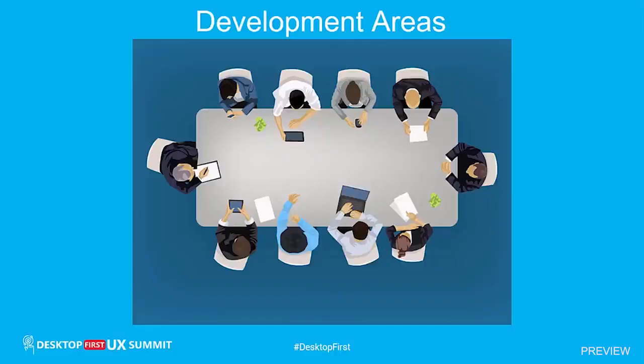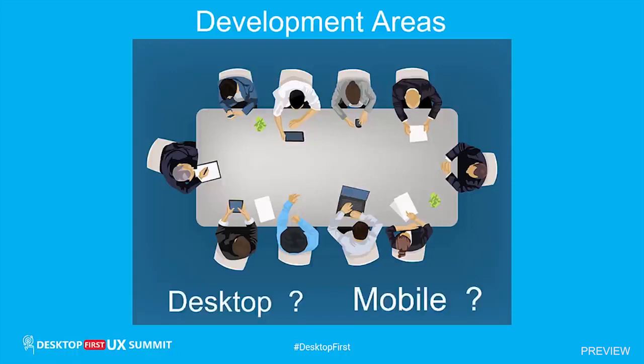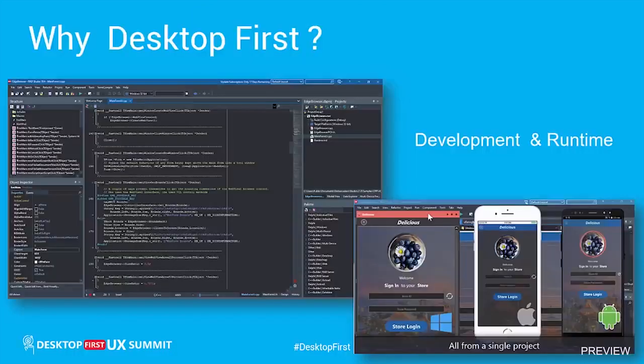There are two development areas: desktop and mobile. Why desktop first on development? Why desktop first on the runtime of your application?